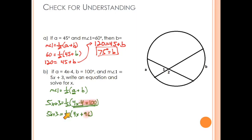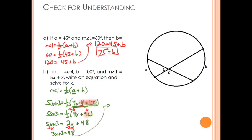Since both numbers are even, I'll distribute the one-half: we get 2x plus 48 equals 5x plus 3. Subtracting 2x from each side gives 48 equals 3x plus 3. Then subtracting 3 from each side: 3x equals 45. Dividing each side by 3, we find x equals 15.